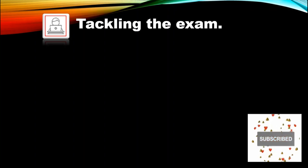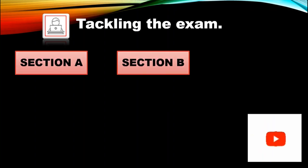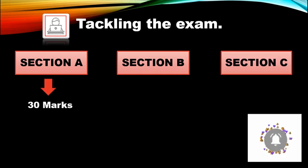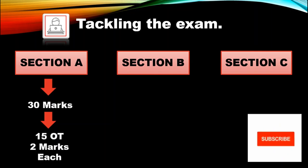Now let's see how to tackle the exam. The Audit and Assurance exam is divided into three parts: Section A, Section B, and Section C. Section A is a 30-mark section divided into 15 objective test questions of 2 marks each, totaling 30 marks.